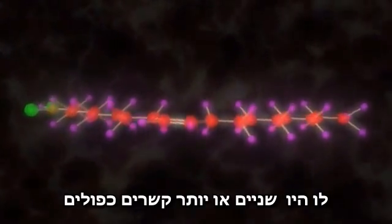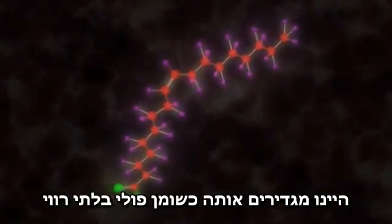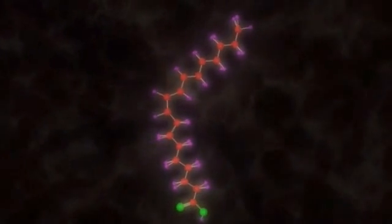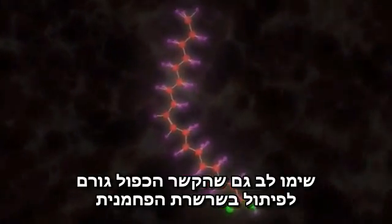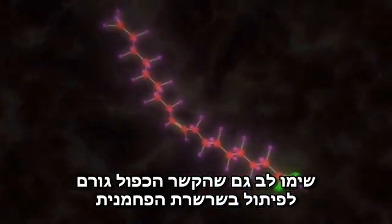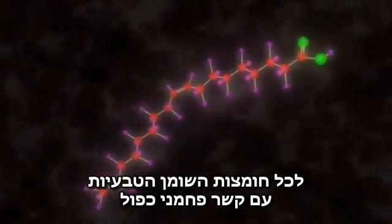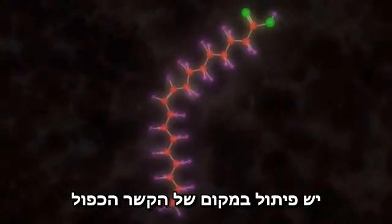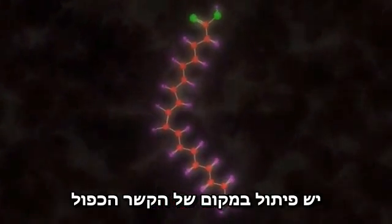If there were two or more, we would say that it is polyunsaturated. Also notice that the carbon double bond causes a kink in the carbon chain. All naturally occurring fatty acids with a double bond have a kink in their shape at the location of the double bond.